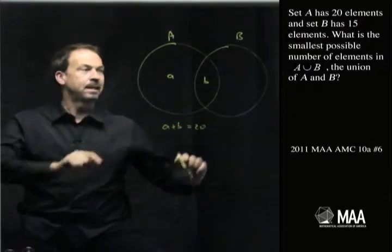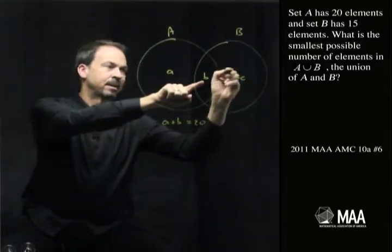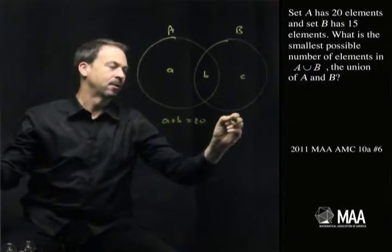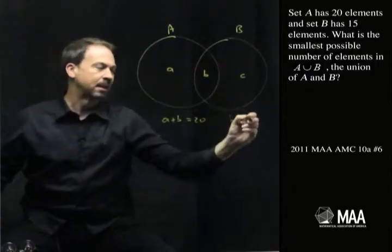And set B has 15 elements. So here's set B, things that are in common plus some stuff that isn't in common. So I'm told that b plus c, the set B, has 15 elements.